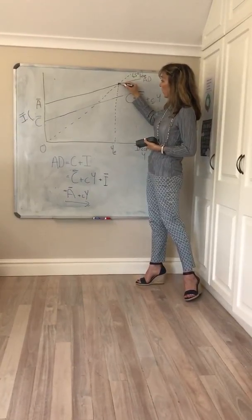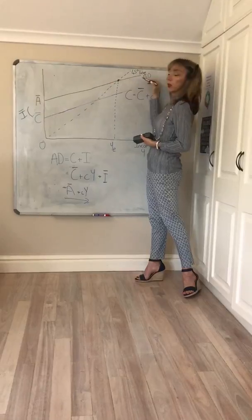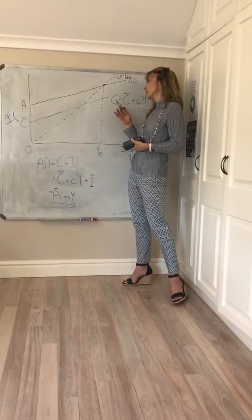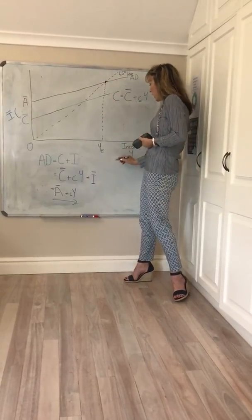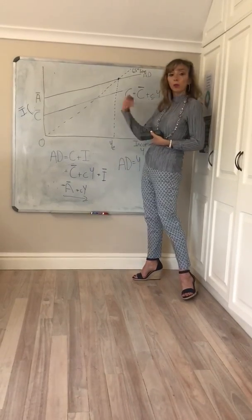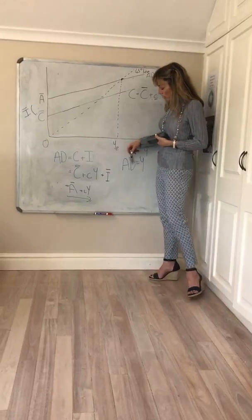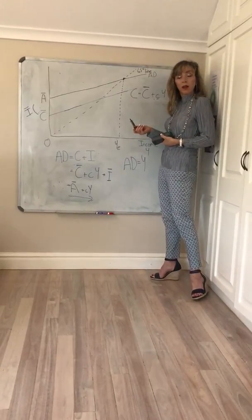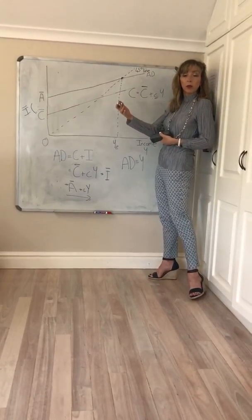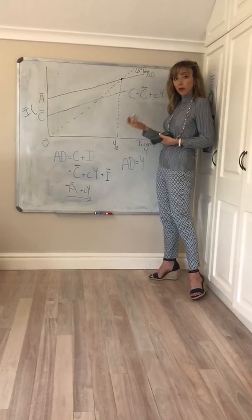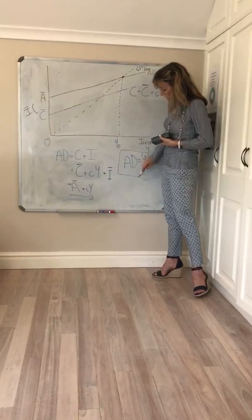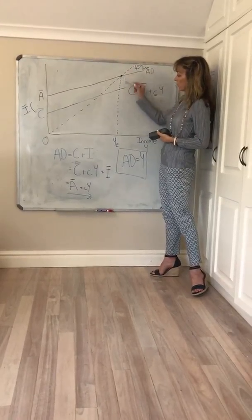Equilibrium will be given by the point where your aggregate demand curve just intersects the 45-degree line. The 45-degree line is like a reference point where aggregate demand equals income or output. Remember that we use income and output to mean the same thing. So if a million rands worth of output is generated, it leads to a million rands worth of income earned by the factors of production. So in equilibrium, aggregate demand equals income or output.